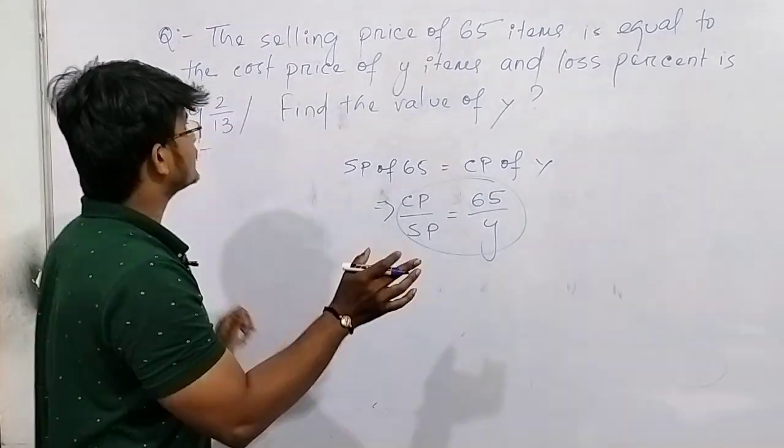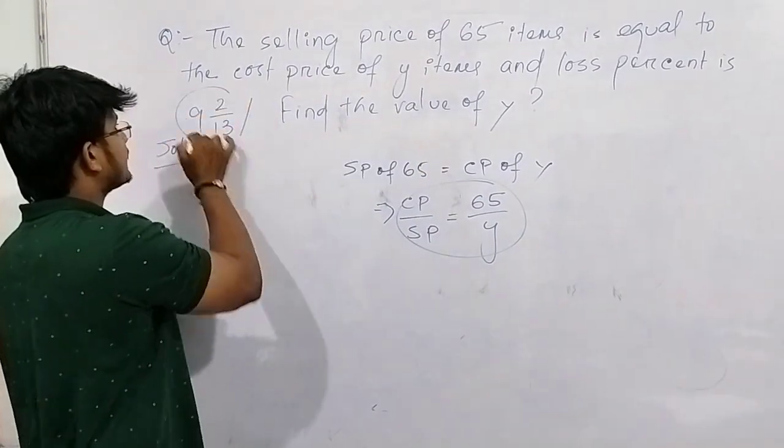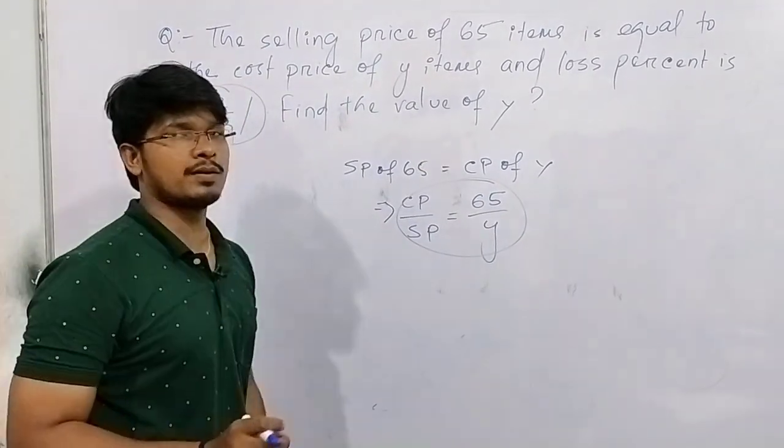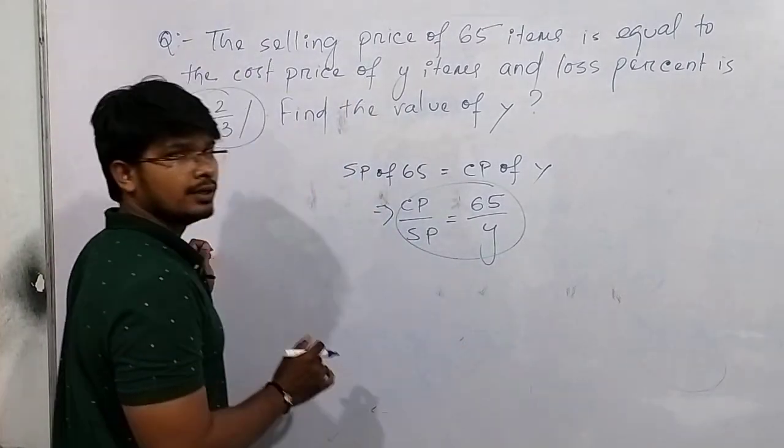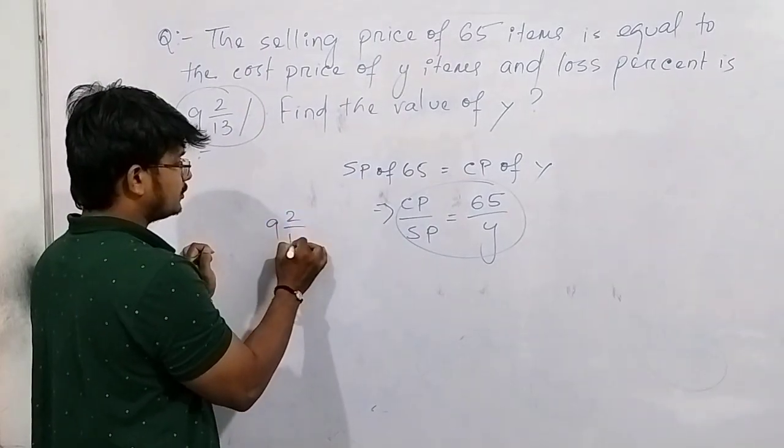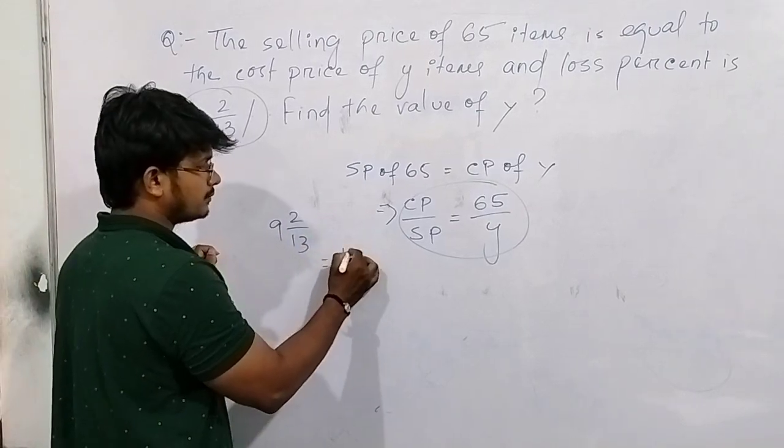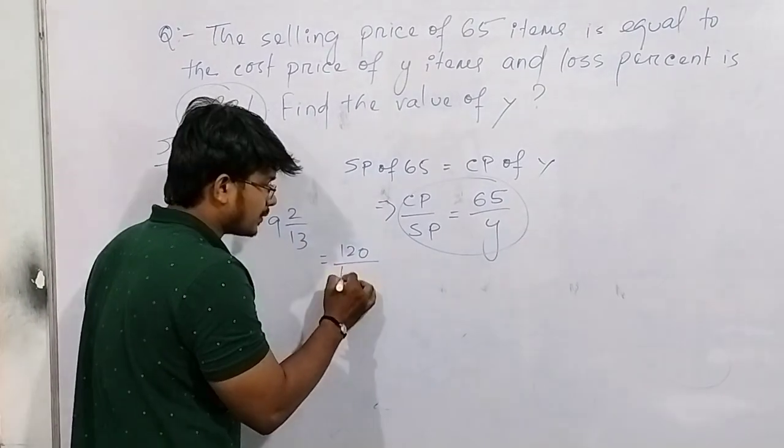Now it is given that loss is 9 2/13 percent. The main problem is 9 2/13, we don't know the ratio. So better convert it. 9 2/13 means 13 times 9 plus 2 divided by 13 percent.